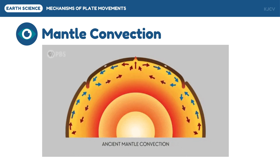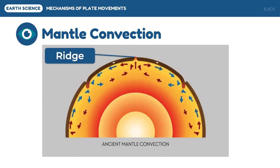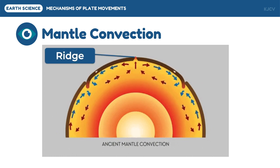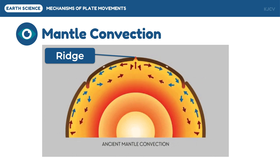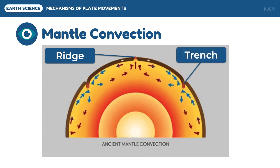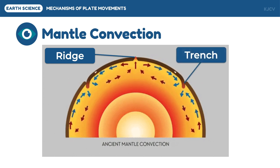In the mantle convection theory, magma in the asthenosphere is heated near the core, which decreases its density. As a result, it rises up to the ridge and pushes the plate riding on it. As the magma cools near the surface of the earth, it becomes denser and goes back down near the core, dragging the plate into the trench. The main driving force of this theory is the earth's internal heat from the core.